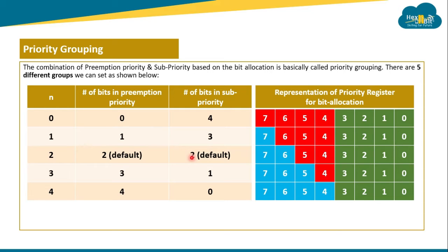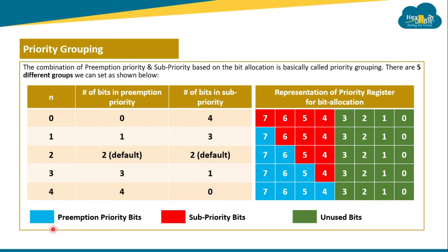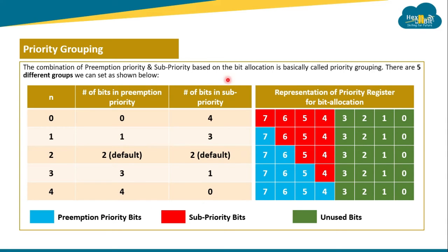Here is a table showing the various priority group configurations. Blue represents preemption priority bits, red represents sub priority bits, and green indicates unused bits. Group 0: all four bits used for sub priority, none for preemption. Group 1: one bit for preemption, three for sub priority. Group 2: two bits each — the default configuration. Group 3: three bits for preemption, one for sub priority. Group 4: all four bits for preemption, none for sub priority.